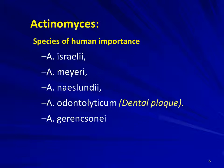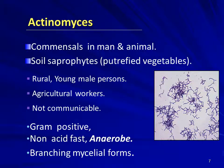The important Actinomyces species causing human disease are A. israelii, A. meyeri, A. naeslundii, A. odontolyticus (the most important organism responsible for dental plaque), and A. gerencseriae. Actinomyces species are commensals in the oral cavity of man and animals and are soil saprophytes responsible for putrefaction of vegetables. The common people affected are rural young male agricultural workers, and the disease is non-communicable.